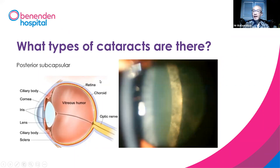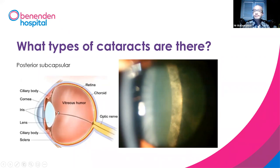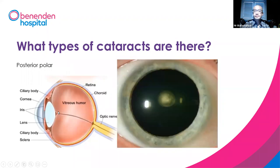This is posterior subcapsular cataract. You can see the opacity at the back of the lens. This is more obvious — you can see a dense opacity right at the centre of the back of the lens. This is called posterior polar cataract.